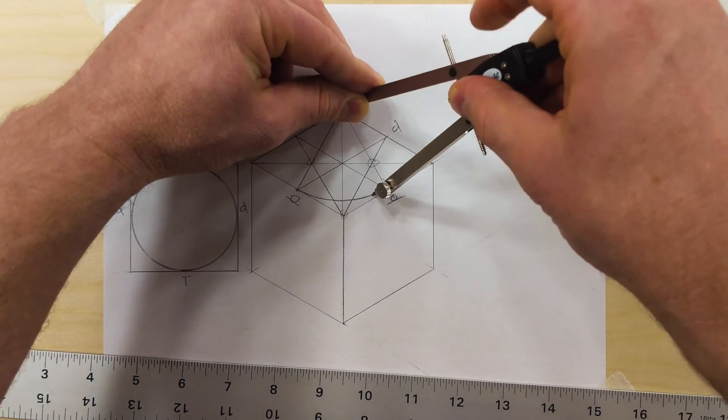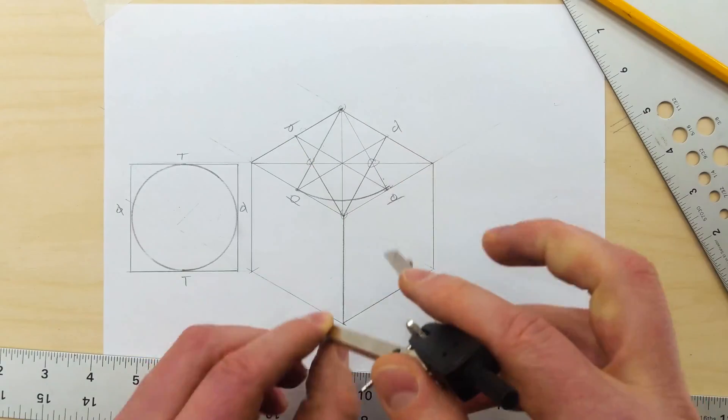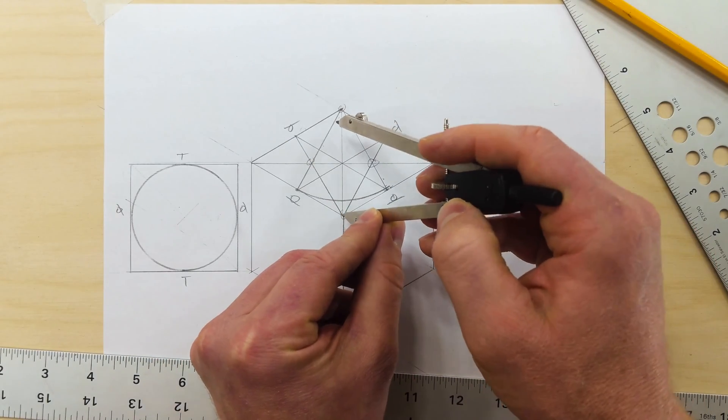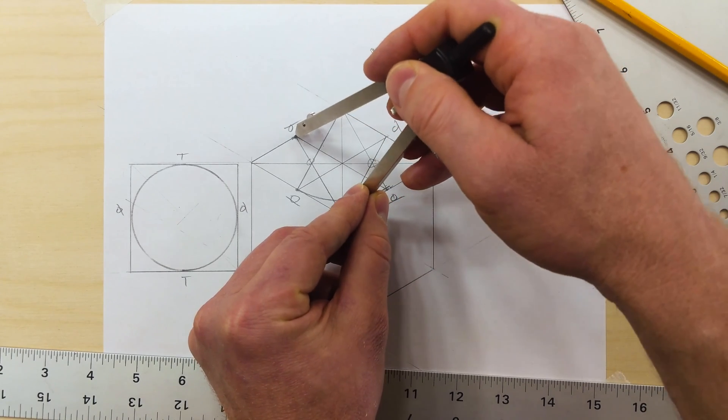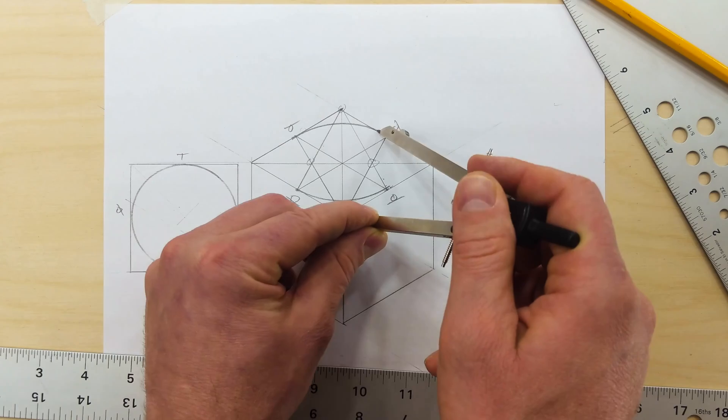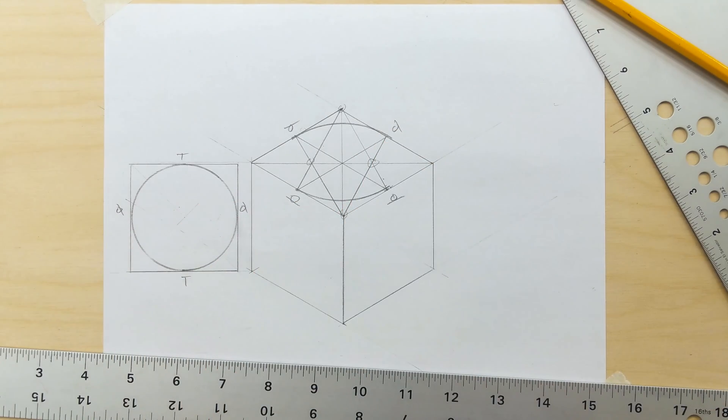Then we can draw our arc. We can draw the same arc from this side and then it hits on the tangent point.